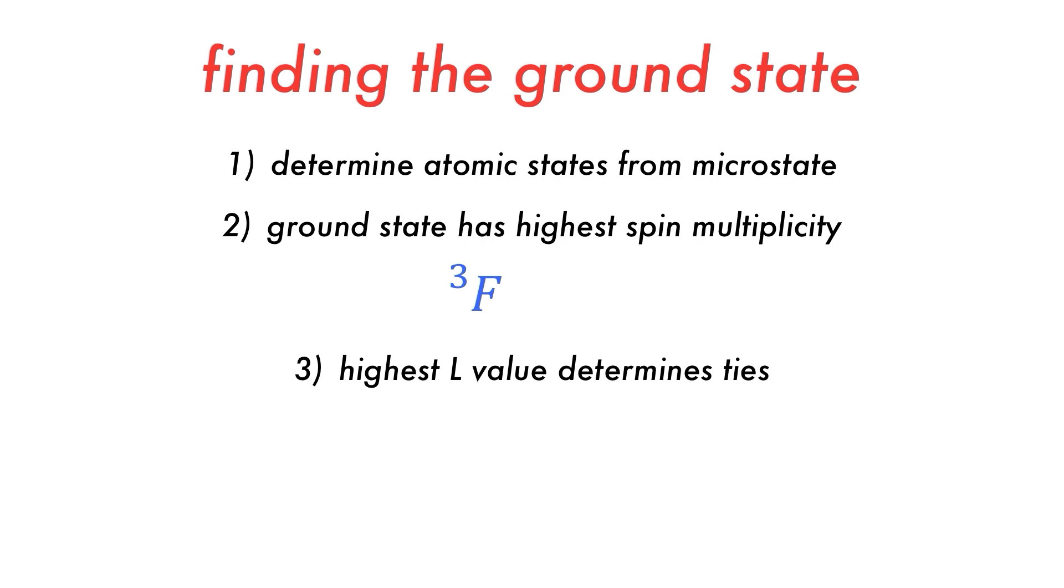as this is the state with the larger number of microstates, thus having the larger entropy. So, in this case of triplet F versus triplet P, triplet F would be considered the ground state, since F has an L value of 3 and P has an L value of 1.